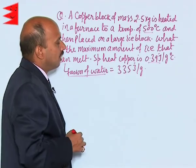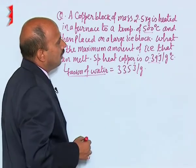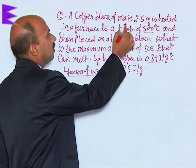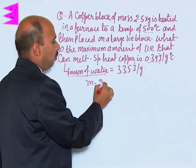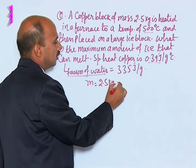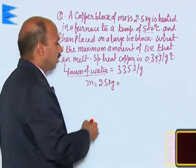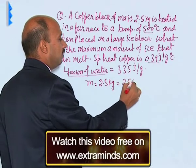Now, see in this case, what you can write here. Mass of the copper block, it is m is equal to 2.5 kg that can be written here as 2500 grams.